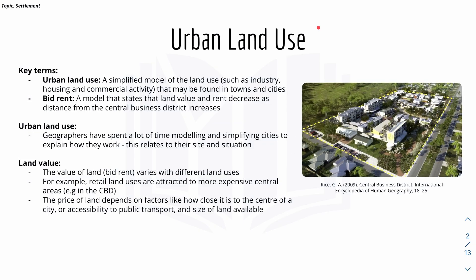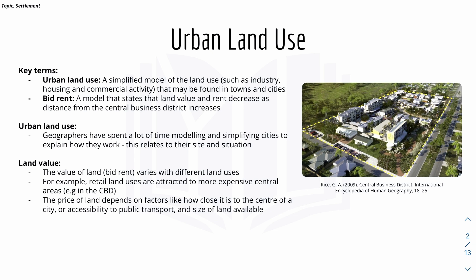Starting with urban land use, we have the different key terms. Urban land use is basically a simplified model of the land use in an urban area, like a town or city. Geographers have spent a lot of time modelling and simplifying cities to explain how they work. This relates to site and situation — site is basically the immediate area the settlement is built on, like flat land. Situation is the relative location of the settlement to nearby things, for example, close to a transport link like a road or river.